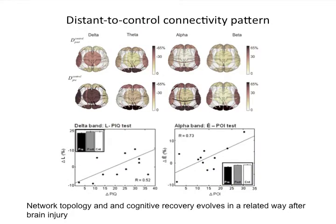Just to show you some of the results we have: we scan people after a traumatic brain injury and the same people after a neurorehabilitation treatment. We wanted to see how these networks recover after neurorehabilitation in different spectral bands. What we see, for example, is that these patients, after the traumatic brain injury, have a pathological increase of connectivity in slow waves and a topological decrease of connectivity in higher spectral bands.